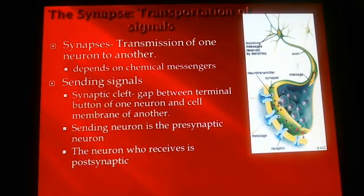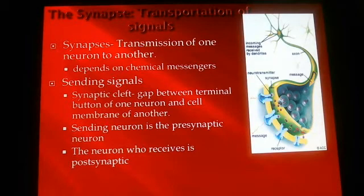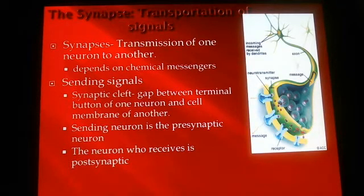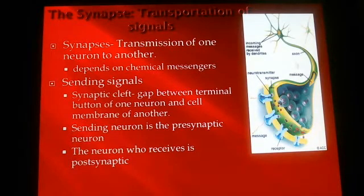The sending signal basically jumps from one synaptic terminal to the dendrite of the next neuron by jumping over the synaptic cleft — a gap between the terminal button of one neuron and the cell membrane or the dendrite of the next neuron. The sending neuron is called a presynaptic neuron, and the neuron that is receiving this information is called a postsynaptic neuron.